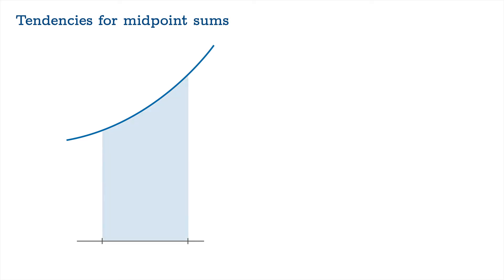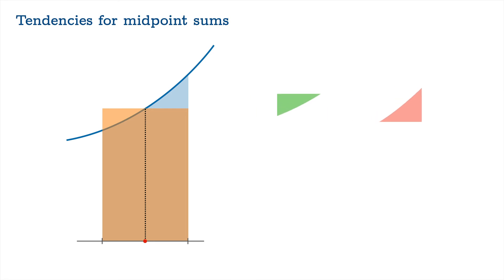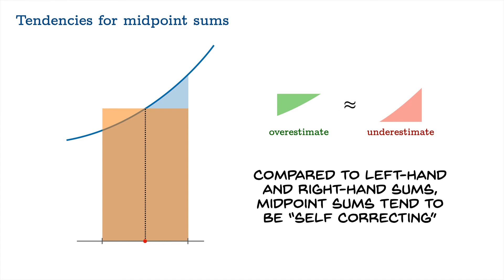Let's look at tendencies for midpoint sums. When you have a midpoint sum, you're sampling the function value at the midpoint. Generally a function is changing its value — it's not constant. So you'd expect on one side for this function value to be too small and on the other side too large. Very often these over and underestimates are roughly equal, which means that compared to left and right-hand sums, midpoint sums tend to be self-correcting — they are innately better able to approximate the area, since each contribution tends to carry an over and underestimate by itself.